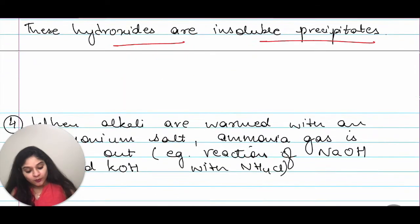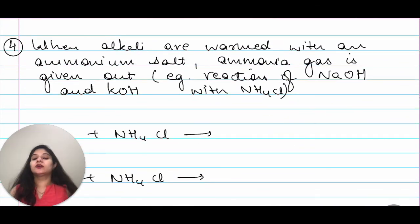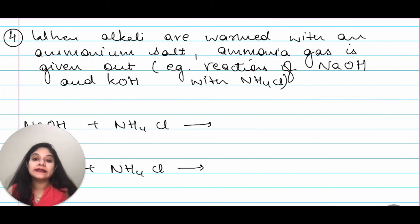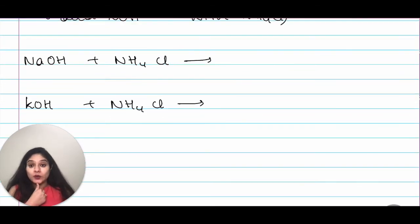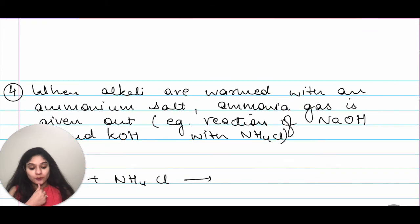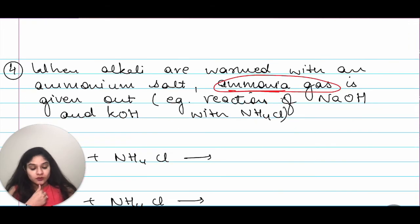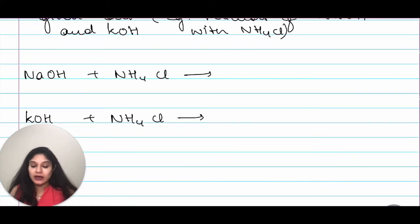Moving on to the last part. That is, the fourth chemical property. When alkalis are warmed with an ammonium salt, ammonia gas is given out of NaOH and KOH. For example, reaction of NaOH and KOH with NH4Cl. Let's look at the reactions. NaOH. They are saying ammonia gas will come out. The first thing we will do is that once you have a base. And that is reacting with ammonium chloride. That is, NH4Cl.